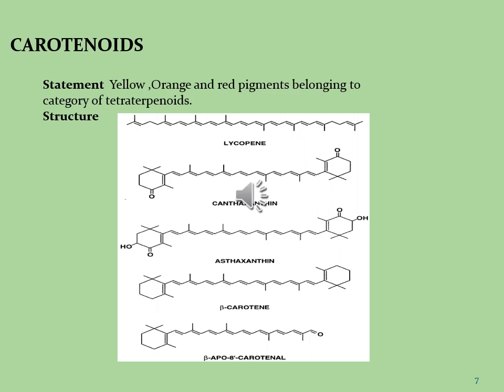Canthaxanthin was first detected from an edible mushroom in the 1950s. It has since been identified in sea trout, algae, salmon, shrimp, and several species of flamingo. It can also be synthetically produced from acetone. Canthaxanthin is used to reduce sensitivity to sunlight, called photosensitivity, experienced by people who have the genetic disease erythropoietic protoporphyria, in which sunlight can cause skin reactions such as itching and rashes.